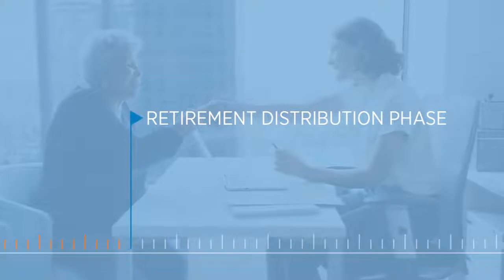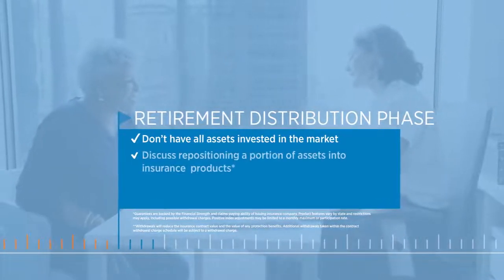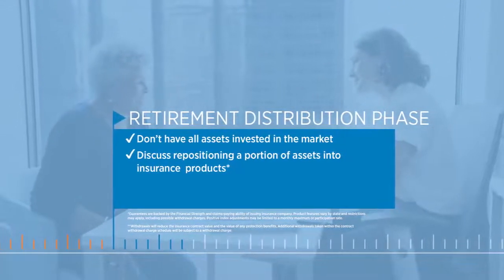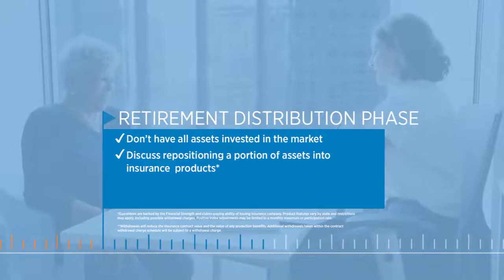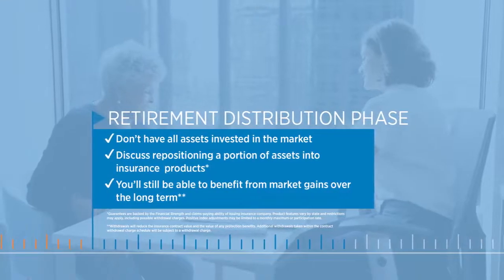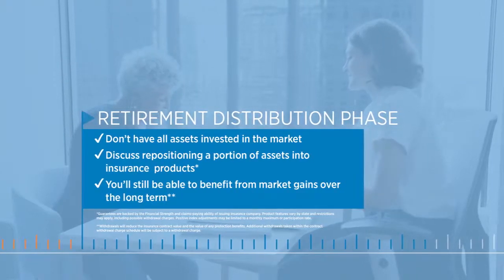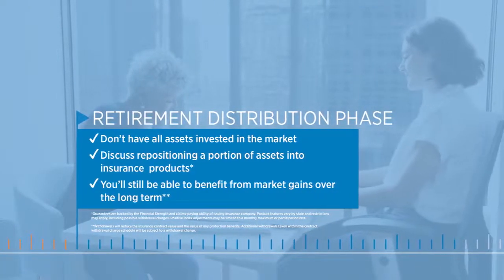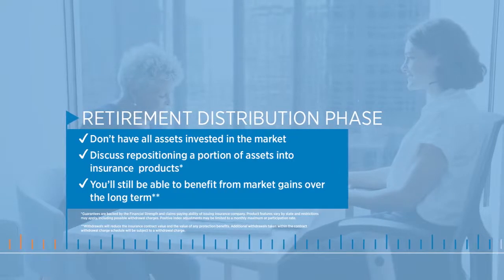So, how can you help reduce sequence of returns risk? If you enter the distribution phase of retirement with all of your assets invested in the market, it can leave you vulnerable to market volatility and sequence of returns risk. You and your financial professional should discuss whether repositioning a portion of your assets out of the market and into insurance products designed to address this risk is appropriate for you. These products can protect your principal and any prior gains from a decrease in the market, in exchange for receiving an interest credit based on positive market performance of a specified index. This allows you to benefit from market gains over the long term, which you can access as supplemental income in retirement, and avoid or reduce market losses.